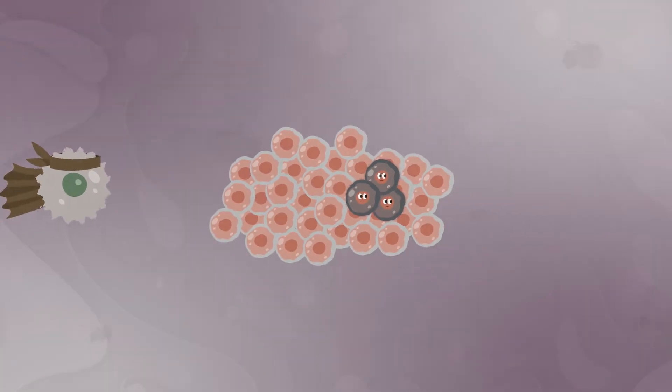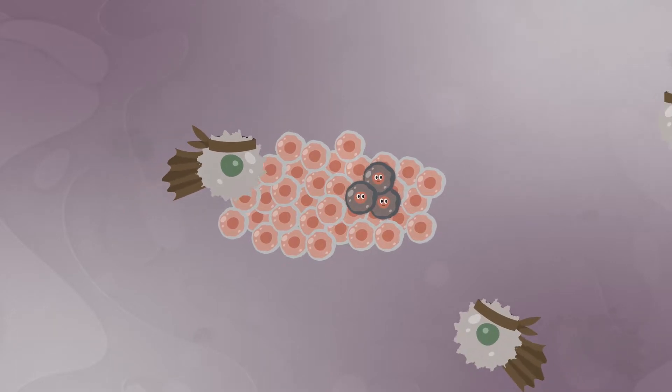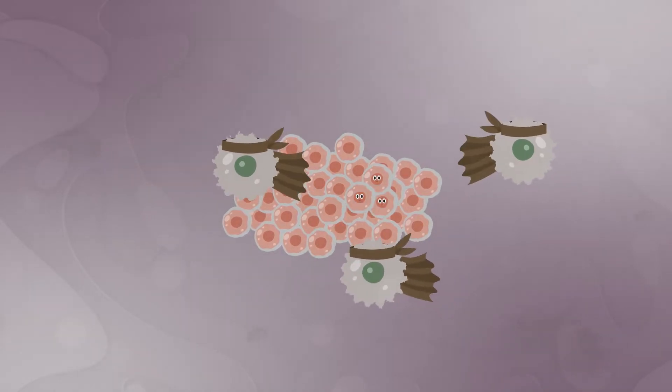The immune system normally tries to kill cancer cells, but cancers grow by tricking the immune system into thinking they are normal cells.